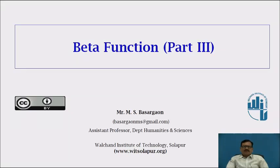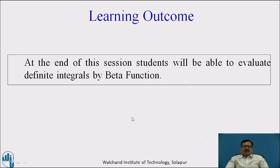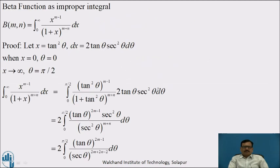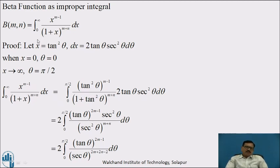In this video, we are going to discuss β function part 3. Learning outcome: at the end of this session, students will be able to evaluate definite integrals by β function. We are going to discuss β function as an improper integral. This is a third form of β function; we have already seen two different forms of β function.